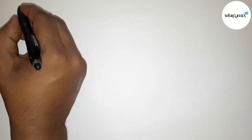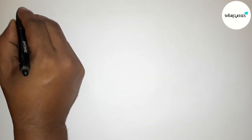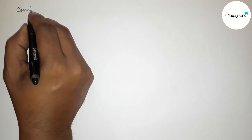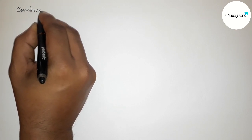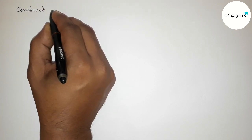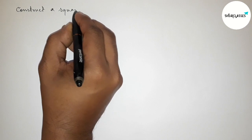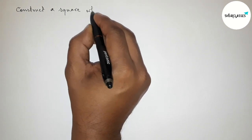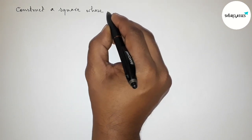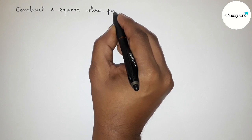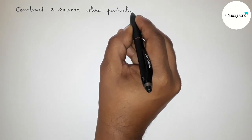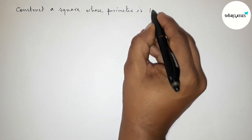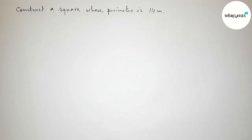Hi everyone, welcome to Essay Share Classes. Today in this video we have to construct a square whose perimeter equals 14 centimeters. Please watch the video till the end. Let's start.